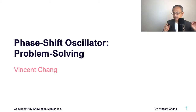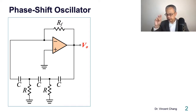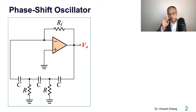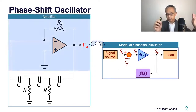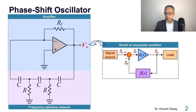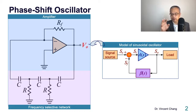The phase shift oscillator is a problem-solving lecture. The circuit is composed of two things: the first is the inverting amplifier — you see the inverting input for the op-amp — and then the third-order RC network. Based on the model of a sinusoidal oscillator, the blue part corresponds to the amplifier and the purple represents the frequency selective network. So you take an inverting amplifier combined with a third-order RC network, tie those two into a closed loop, and it forms a phase shift oscillator.